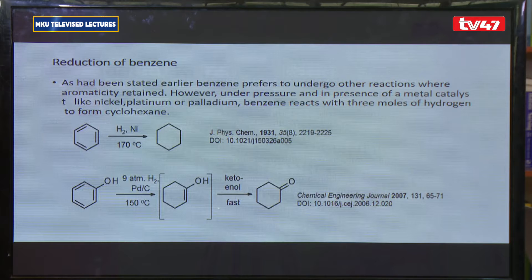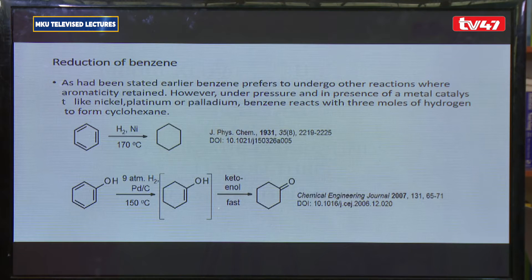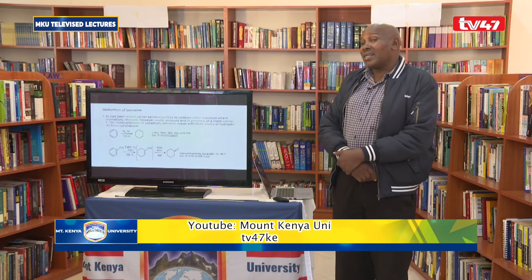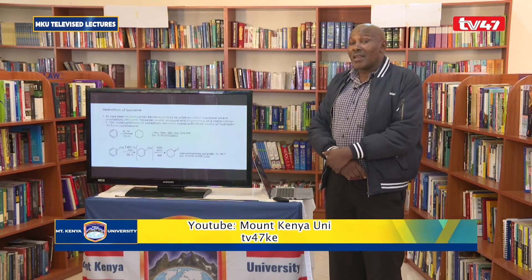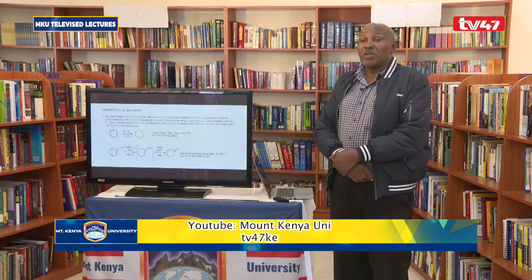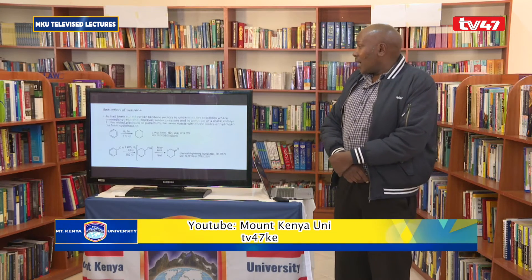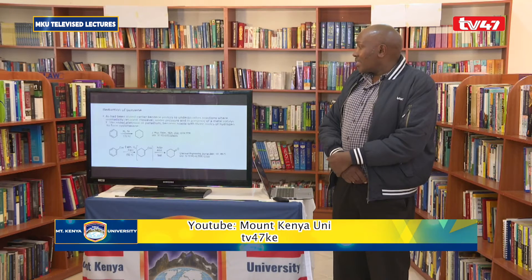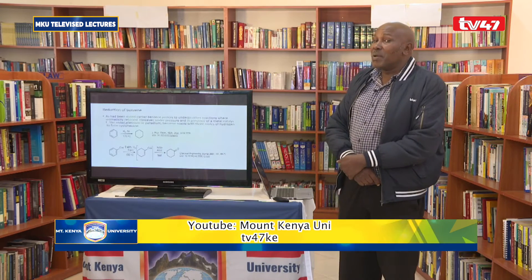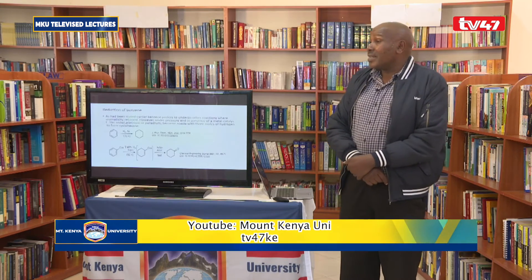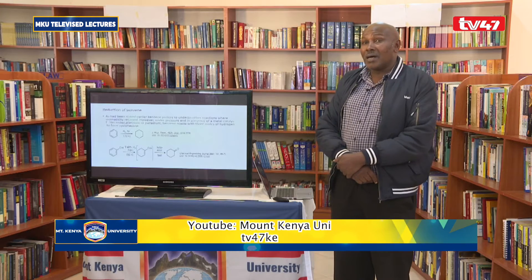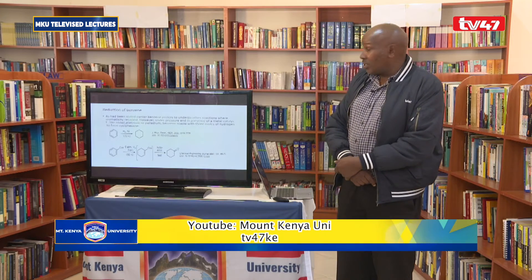We start by looking at the reduction of benzene. In Lesson 1, we observed that the representation of double bonds in benzene is different in that benzene does not ordinarily undergo oxidation reactions, unlike other organic compounds that would be considered to have double bonds.